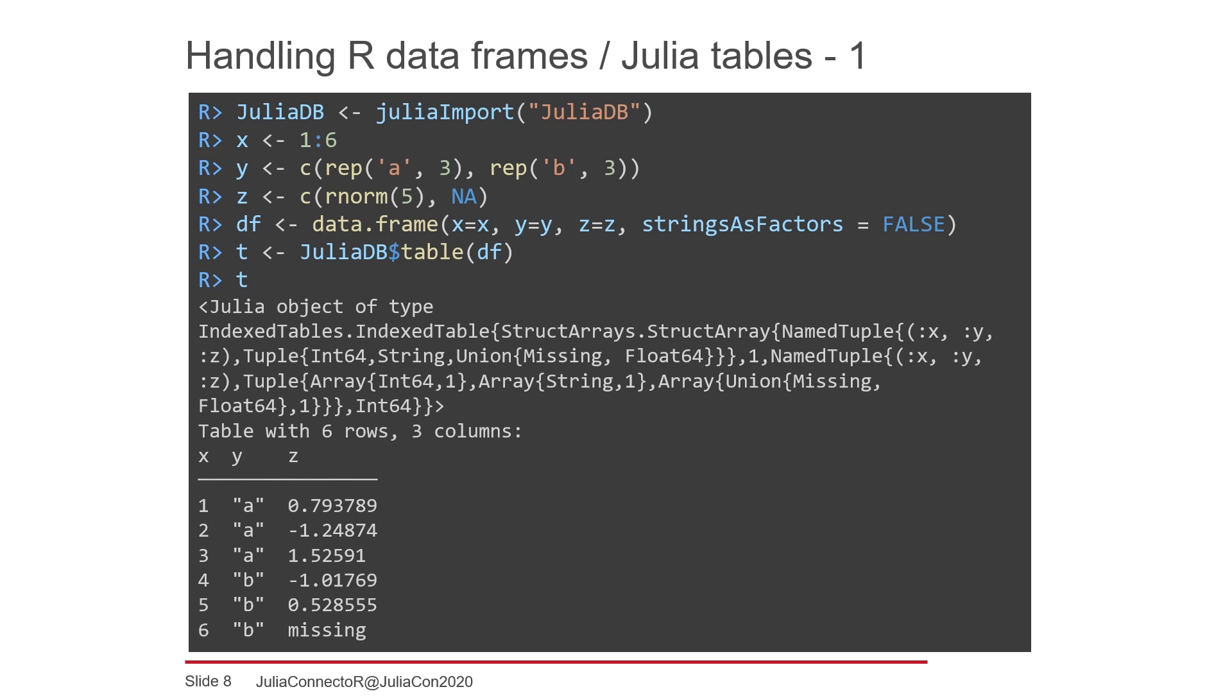Another example where Julia is useful because of its speed is the analysis of large datasets. To demonstrate the handling of tabular data, we use the package JuliaDB. In R, data of tabular structure is kept in data frames. In Julia we have the tables package, which provides a common interface that is implemented by many other packages dealing with tabular data. This interface is also used by JuliaDB.